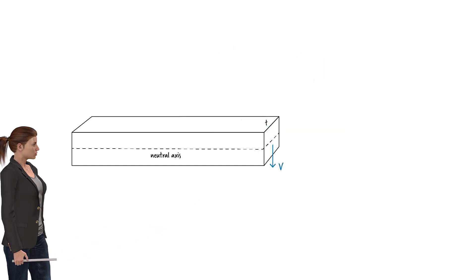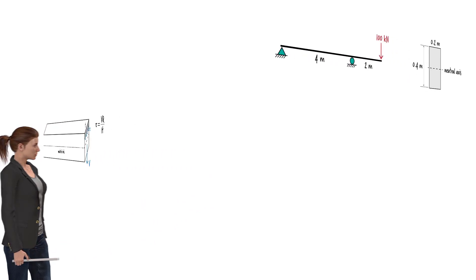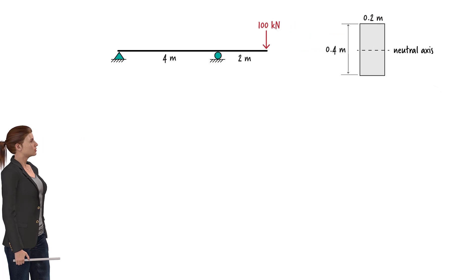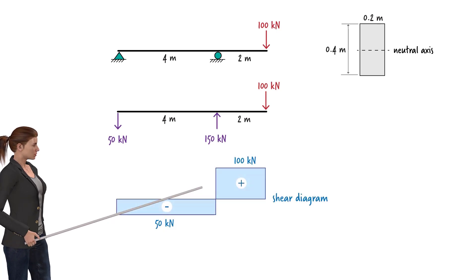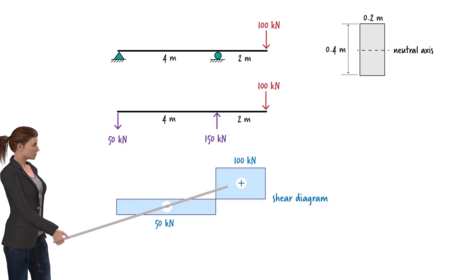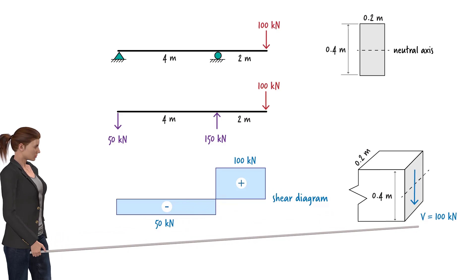In summary, the shear stress acting across the cross-section of the beam at a specific distance from the neutral axis can be determined using this equation. Suppose we have a beam with a rectangular cross-section subjected to a concentrated load of 100 kN. We can easily determine the maximum shear force in the beam. The shear force reaches its maximum value of 100 kN in the overhang section of the beam, so parallel to the beam's cross-section, we have a shear force of 100 kN.